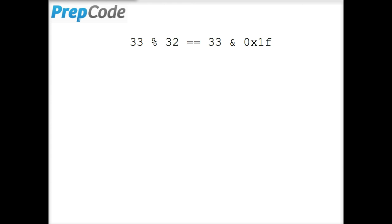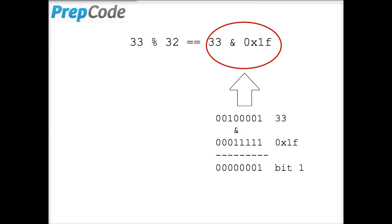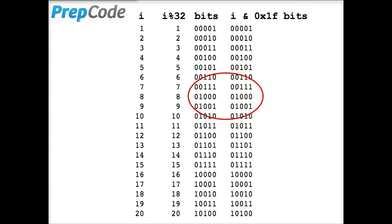An efficient way of finding 33 modulo 32 is simply taking the 5 least significant bits. Thus, i modulo 32 and i bitwise and 1f are the same.